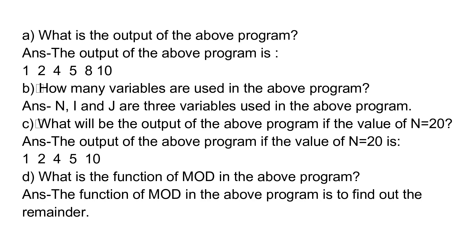Question 14. A. What is the output of the above program? Answer: The output is 1, 2, 4, 5, 8, 10. B. How many variables are used in the above program? Answer: N, I, and J — 3 variables are used. C. What will be the output if the value of N is equal to 20? Answer: The output is 1, 2, 4, 5, 10. D. What is the function of MOD in the above program? Answer: The function of MOD is to find out the remainder.